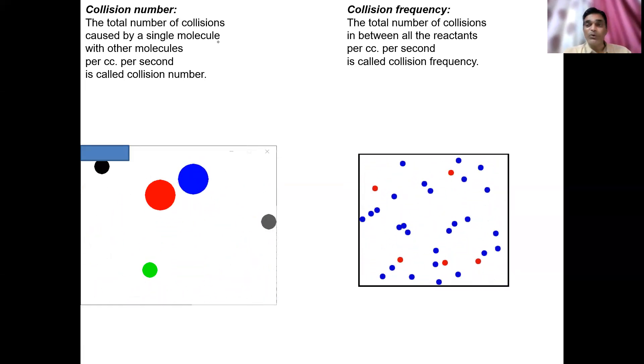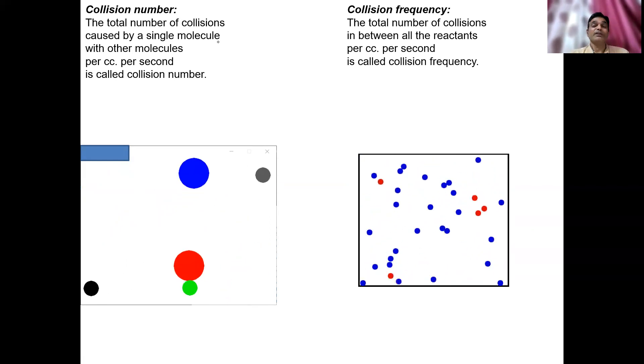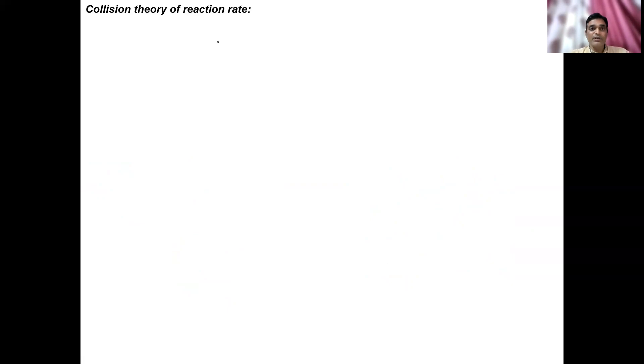Both definitions are very important and have their own distinct meaning. They will be used further in the theories ahead. In the next lecture we will cover collision theory for monomolecular/unimolecular reactions — the Lindemann hypothesis — followed by collision theory for bimolecular reactions, and then transition state theory or the theory of absolute reaction rate.